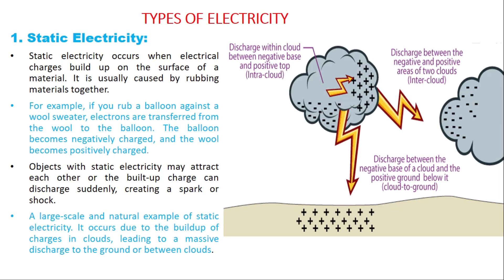This build-up of electrons or charges on the surface of the material is usually caused by rubbing materials together. For example, if you rub a balloon against a wool sweater, electrons are transferred from the wool to the balloon. This makes the balloon negatively charged and the wool positively charged.